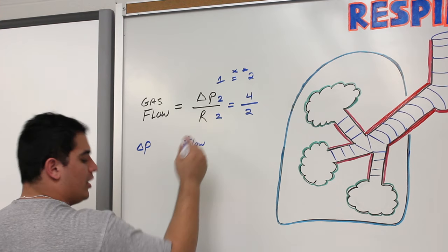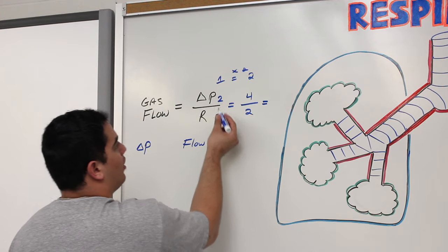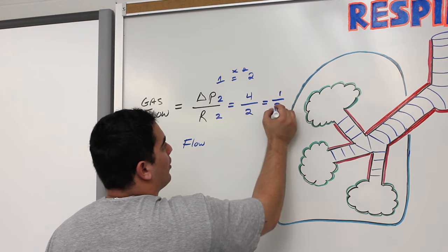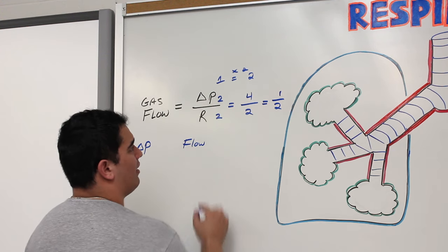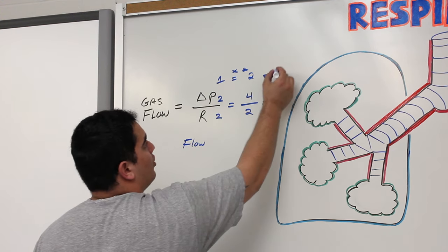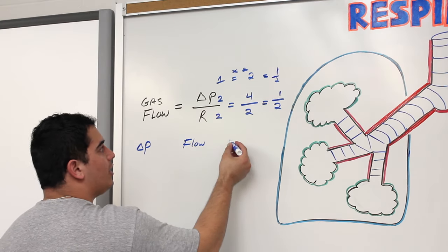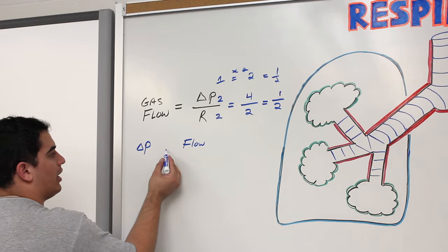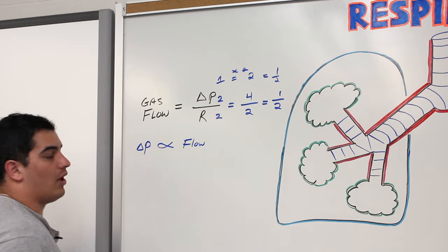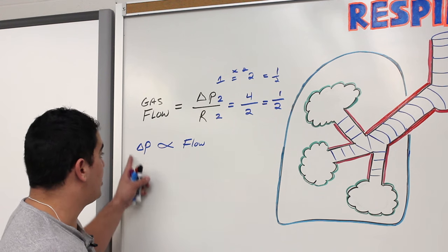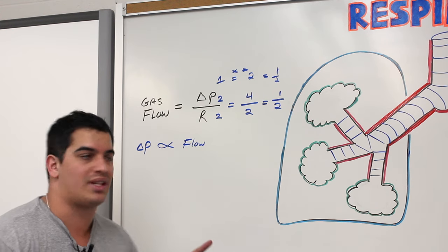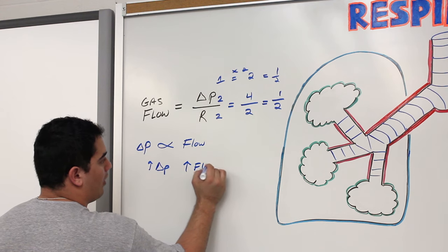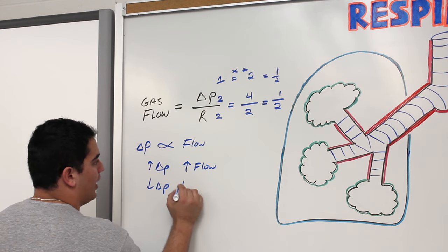What happens if I decrease the pressure? We had 2/2 = 1, then 4/2 = 2. If I drop pressure to 1, so 1/2, the flow goes down to one half. Whenever pressure decreases, gas flow also decreases, as long as resistance remains constant. The relationship is that pressure is directly proportional to flow. Increase in pressure directly relates to an increase in flow; decrease in pressure relates to a decrease in flow.